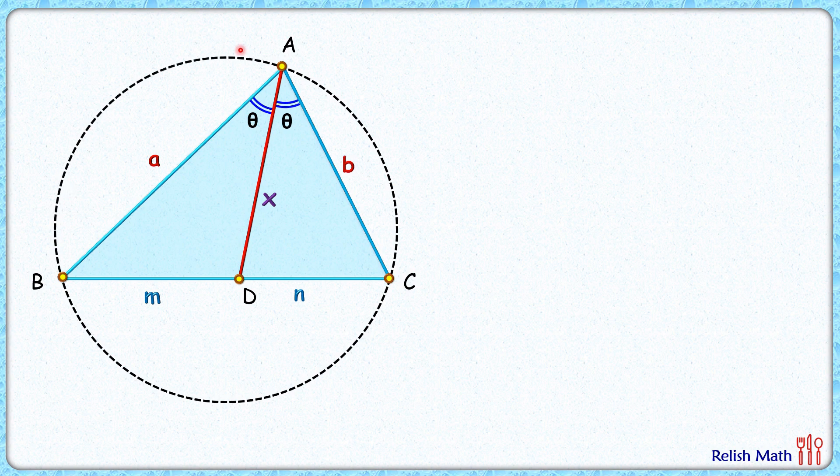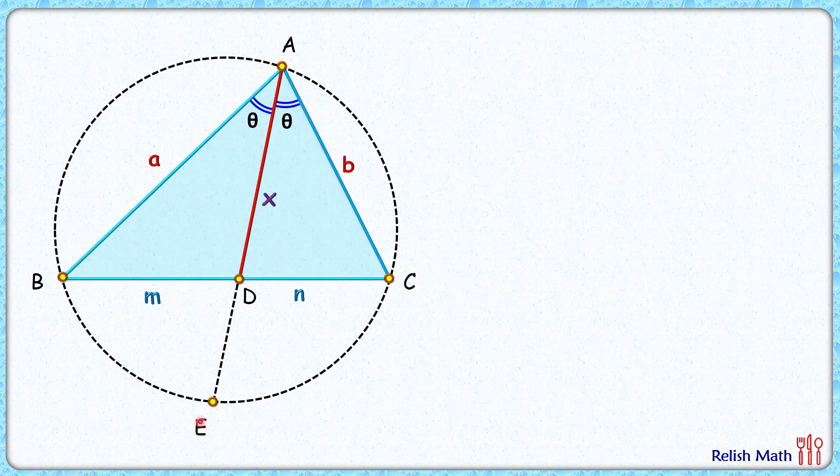Draw a circumcircle to this triangle ABC and extend AD to meet this circle at point E. Let's assume DE length is y.